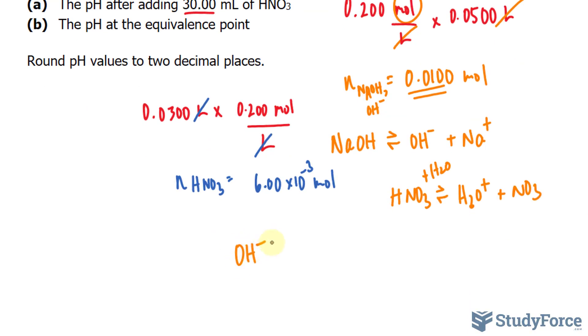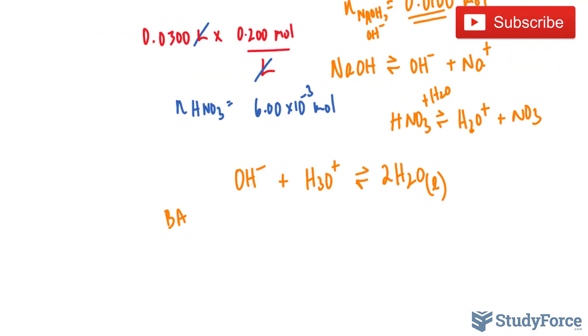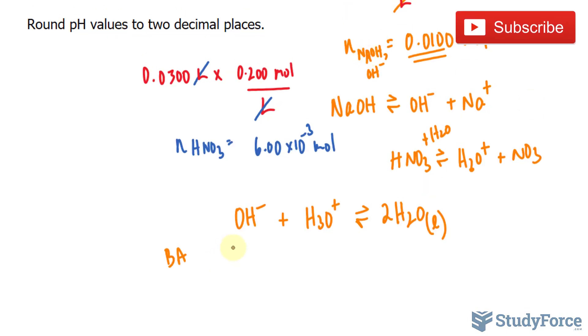We have OH minus being combined with H3O plus, and that's forming water. That's the product of mixing an acid and a base together. Of course, you would have two molecules of this, and it would be liquid. So before addition, I'll call that BA, we had this many moles of OH minus, and of course, none of these, so I'll just write down approximately zero.